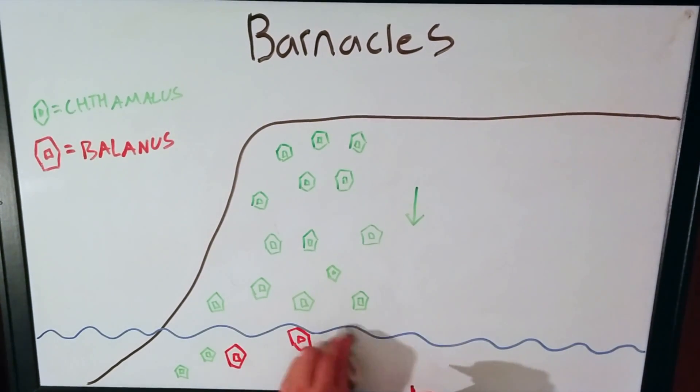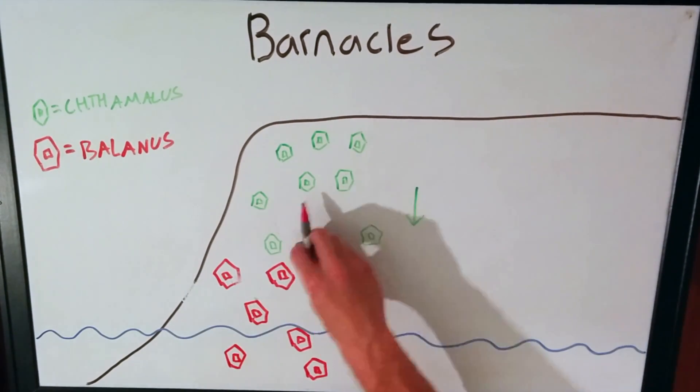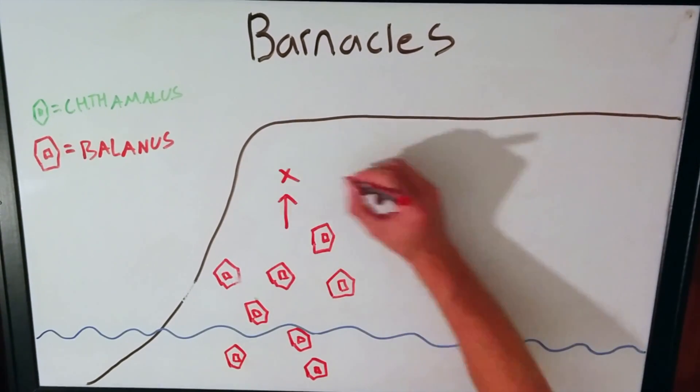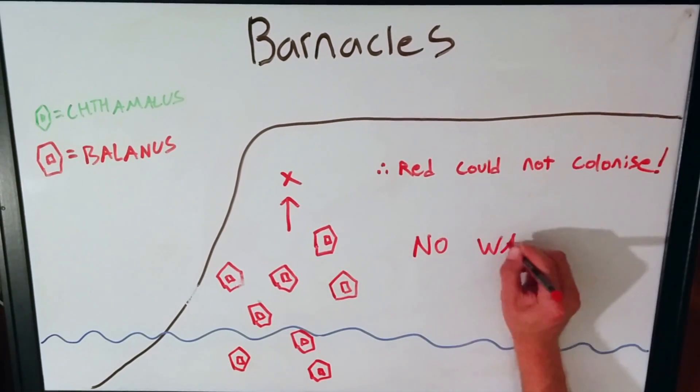But if instead we removed the small ones, we could not see the big ones overtake the area as they still cannot tolerate being dried out from the sun. Therefore, this creates the intertidal zonation bands we see on the coast everywhere.